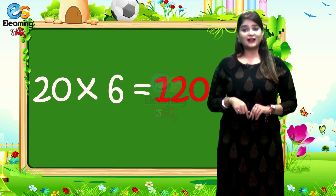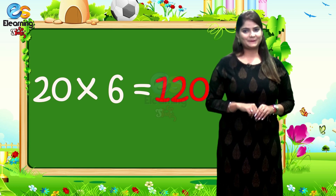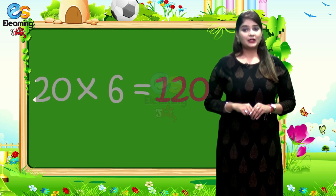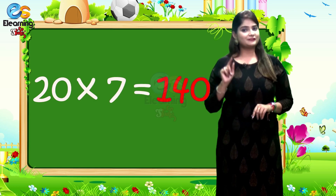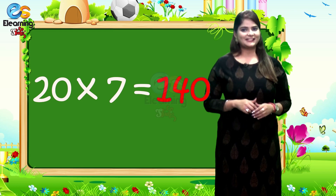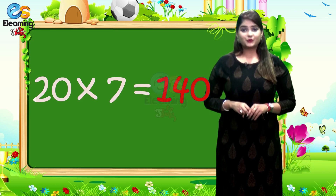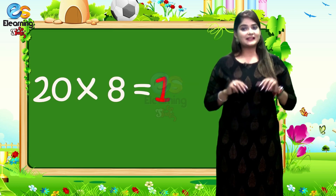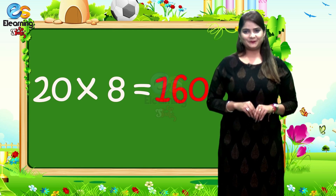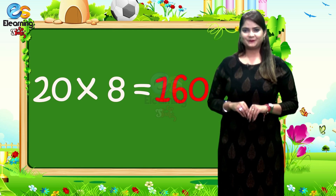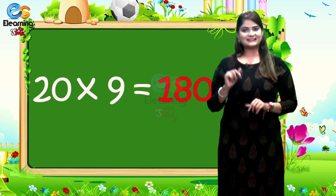20 times 6 is 120. 20 times 7 is 140. 20 times 8 is 160. 20 times 9 is 180.